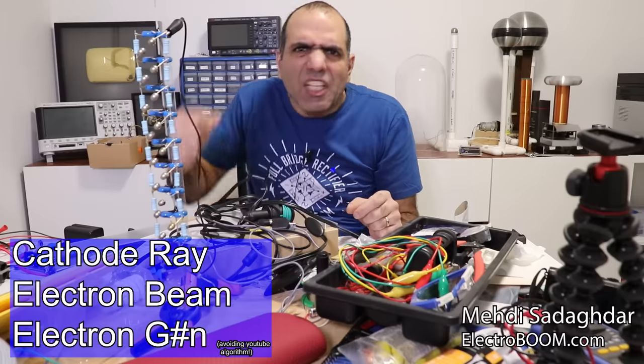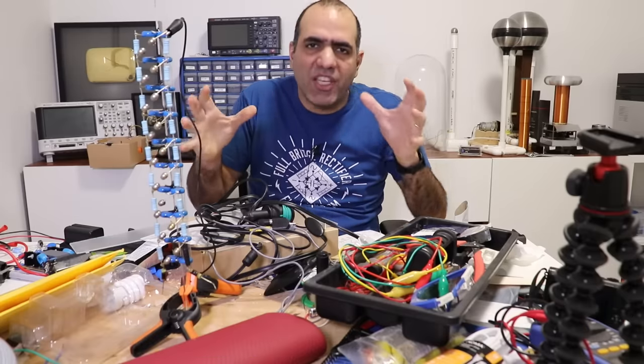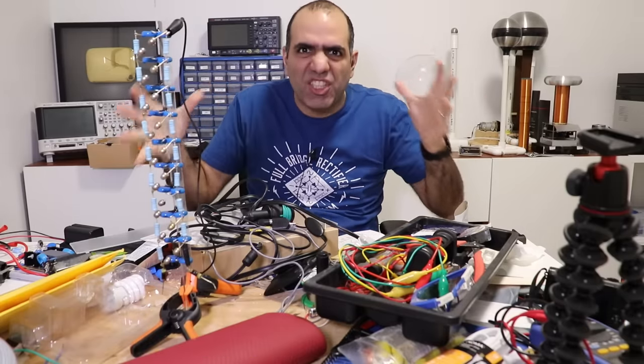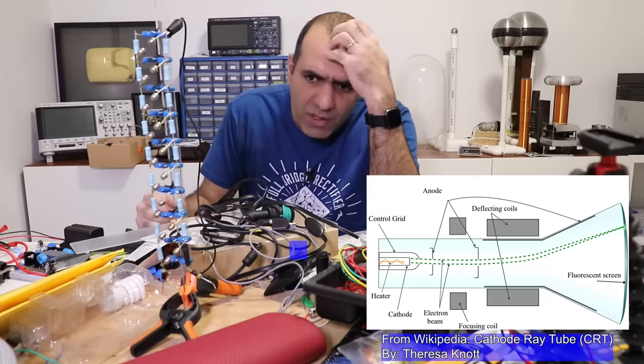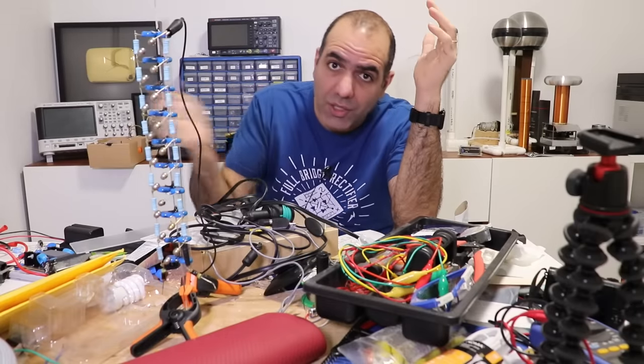Hi, today I'm going to make a cathode ray or electron gun, one of those things that's used in old CRT tube TVs that would shoot electrons and draw pictures on the surface of the TV. Well, I'm not going to make a TV, just the electron gun.